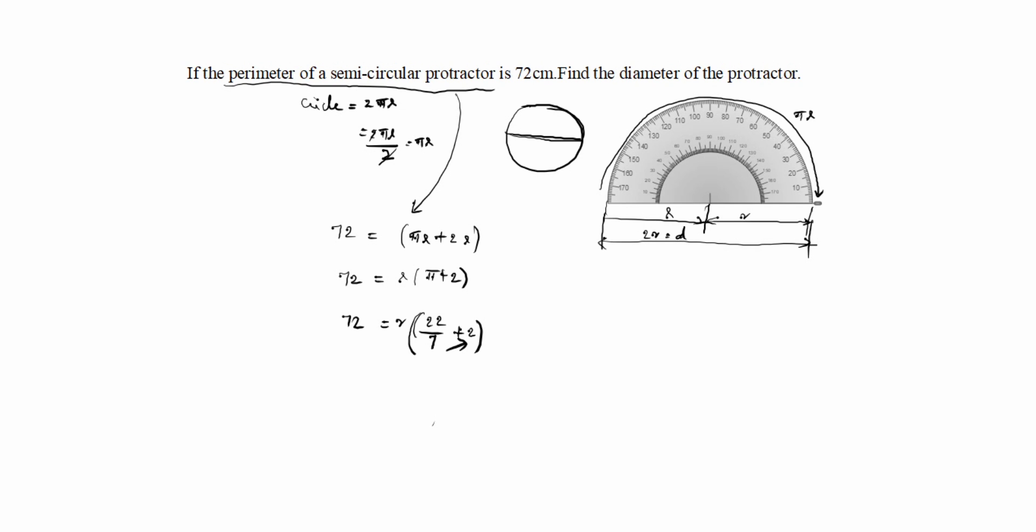We have to cross multiply. r(22 + 14) divided by 7 equal to 72. So r times 36 by 7 equal to 72.